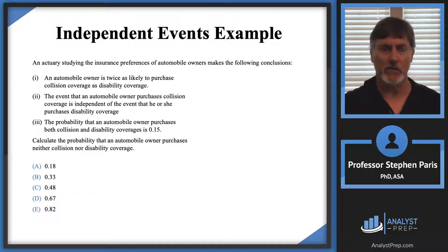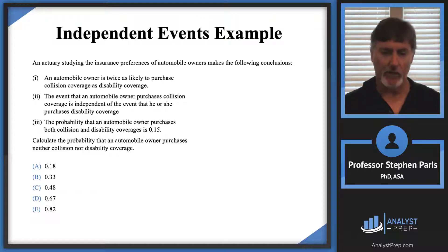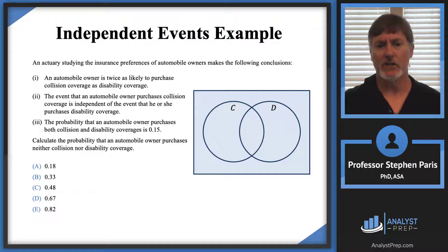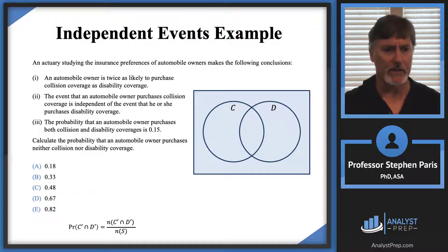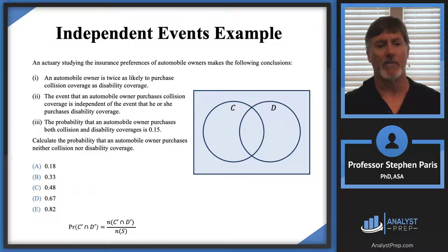You don't need to know what collision coverage and disability coverage mean — you'll learn that later in another course. Just know that those are different coverages you can purchase as an automobile insurance customer. For all of these general probability questions, I set up a Venn diagram with event C — that the customer purchases collision coverage — and event D — that the owner purchases disability coverage. The probability we're looking for, purchasing neither collision nor disability, means the event is C complement intersect D complement.